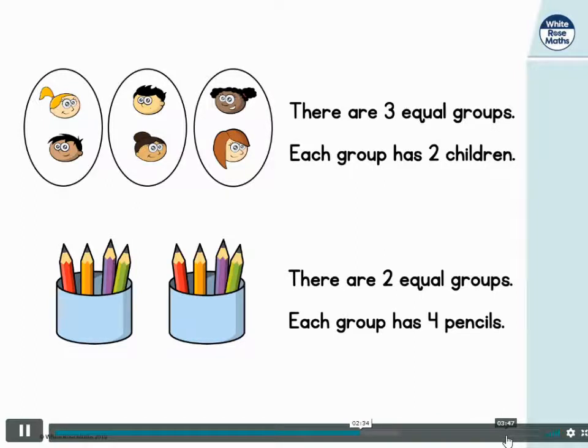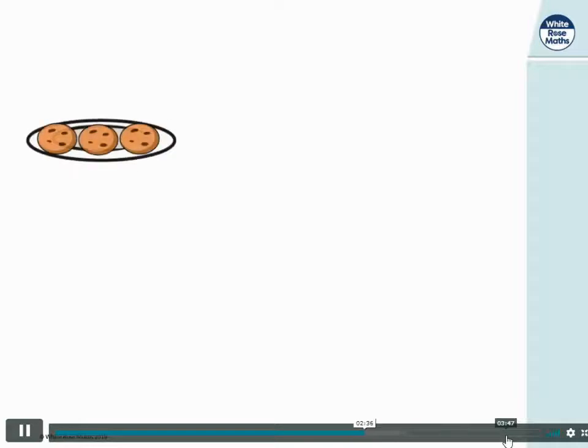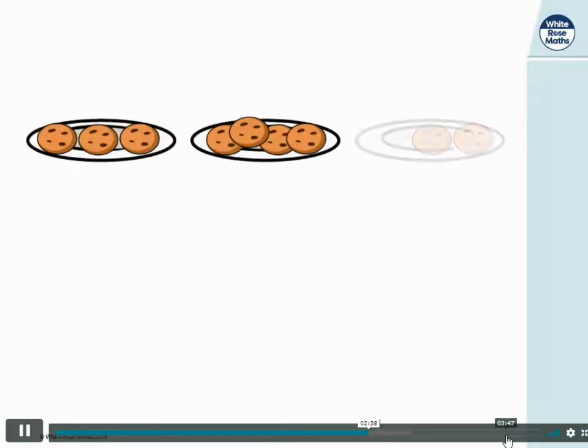Cookies this time, and three groups of cookies. Are the groups equal or are they unequal? That's right, they're unequal. The first plate has got one, two, three cookies and the middle plate has got one, two, three, four cookies. So we know they're unequal and we can just check the last plate has got one, two cookies.